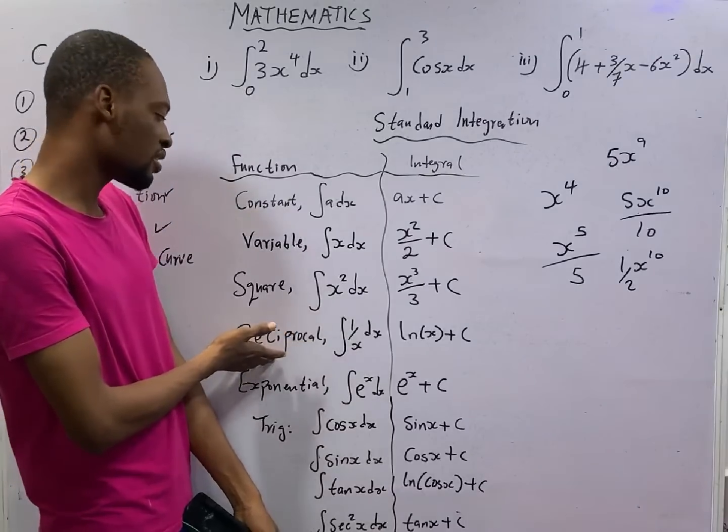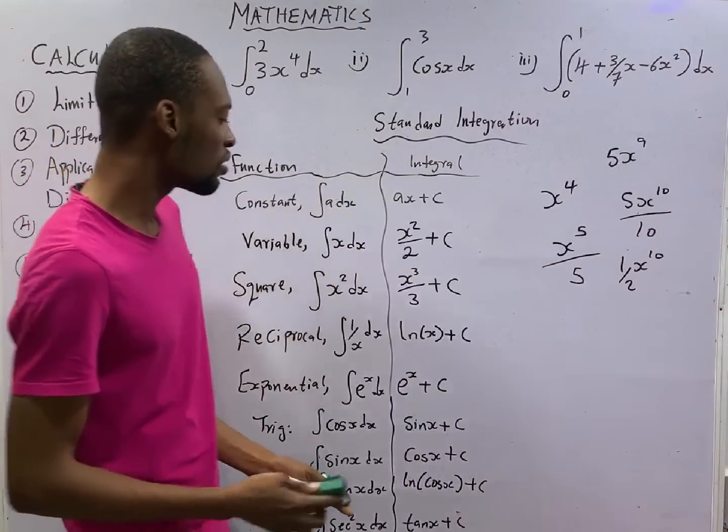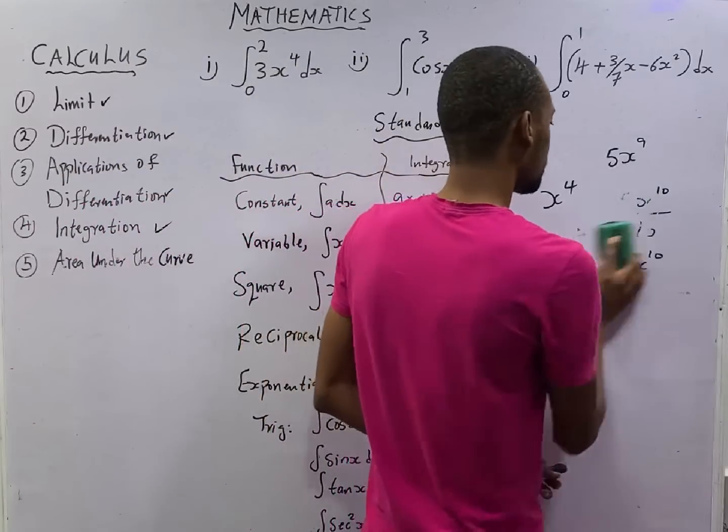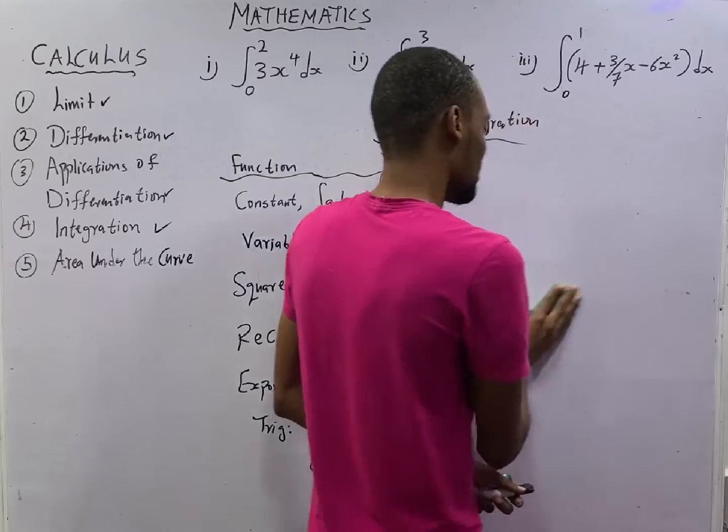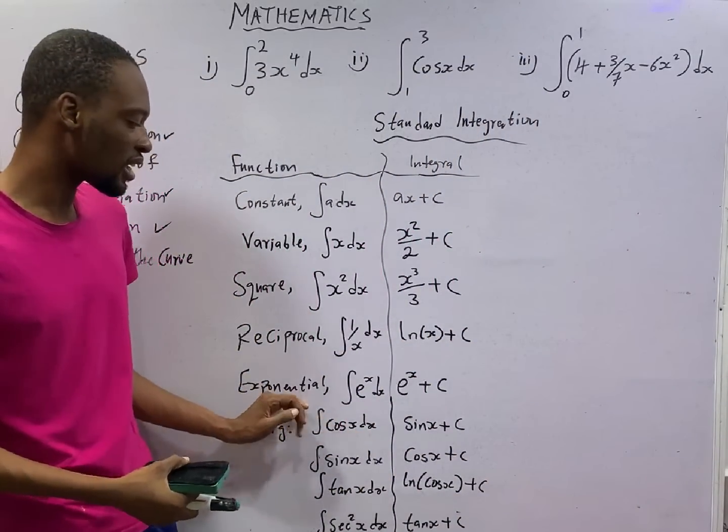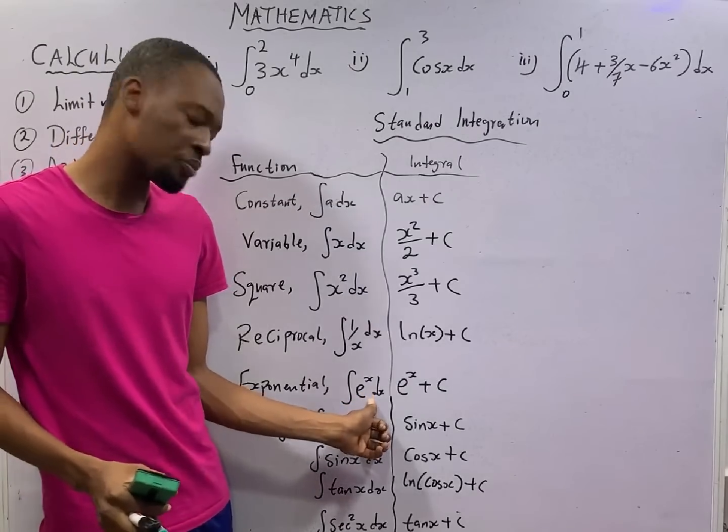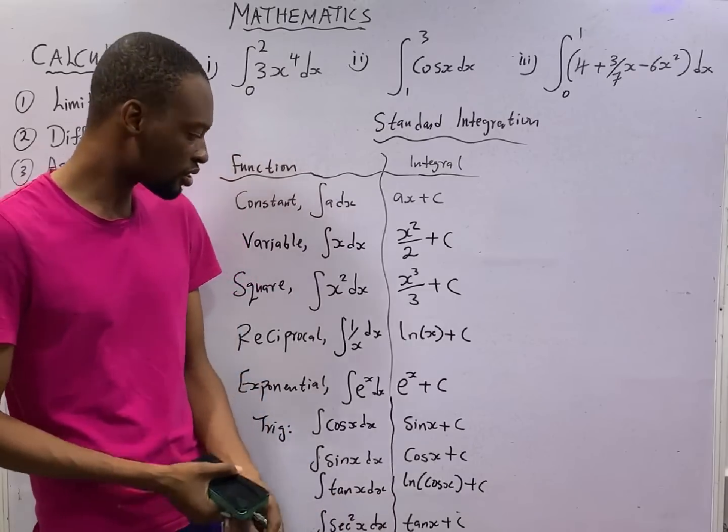If you are integrating a reciprocal, 1 over s, you get ln s, all in s, anyone you prefer to call it, ln s plus c. When you integrate exponential, for example, if I say integrate exponential s, the result will still be exponential s plus c. It does not change.